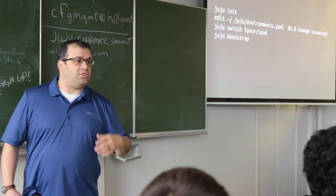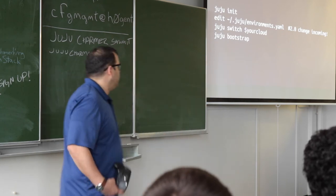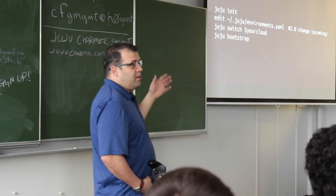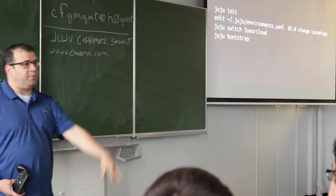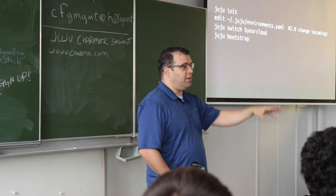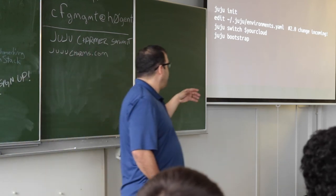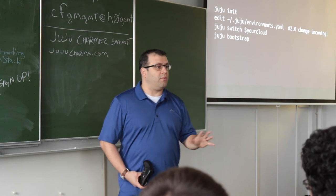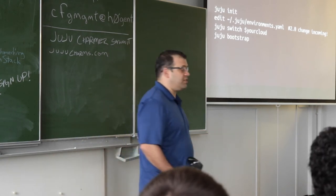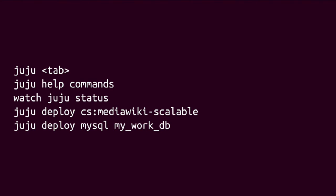Then you type the 'juju bootstrap' command. Juju bootstrap fires up a controller, and the controller hosts all your models. That takes a few minutes — whatever cloud you're in, Juju requests an instance, the cloud provides it, Juju installs the operating system, does a quick update/upgrade, installs the Juju controller, and then that node handles all the modeling for you. On Amazon it usually takes five to seven minutes. For those using Juju in HA mode, make sure you have an odd number of controllers available.